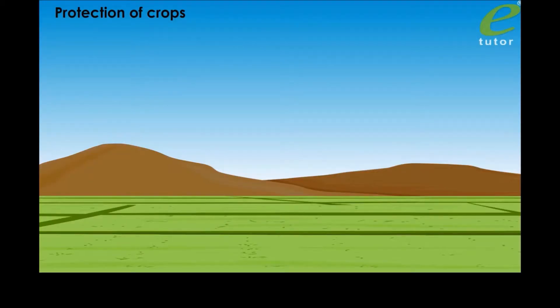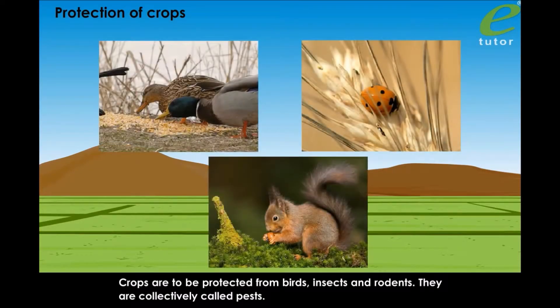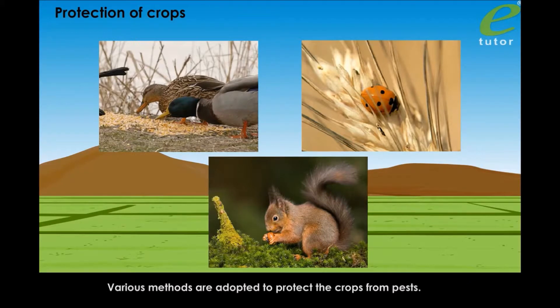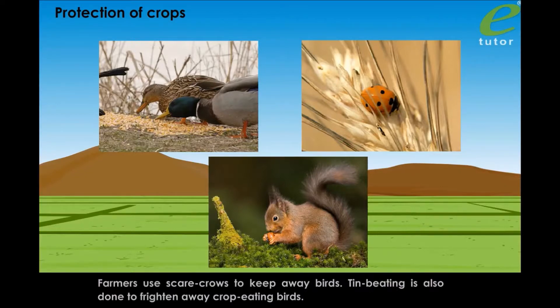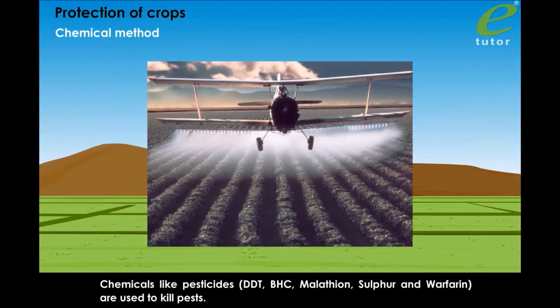Crops are to be protected from birds, insects, and rodents — they are collectively called pests. Various methods are adopted to protect crops from pests. Farmers use scarecrows to keep away birds; tin beating is also done to frighten away crop-eating birds. Chemical method: chemicals like pesticides, DDT, BHC, Malathion, sulfur, and warfarin are used